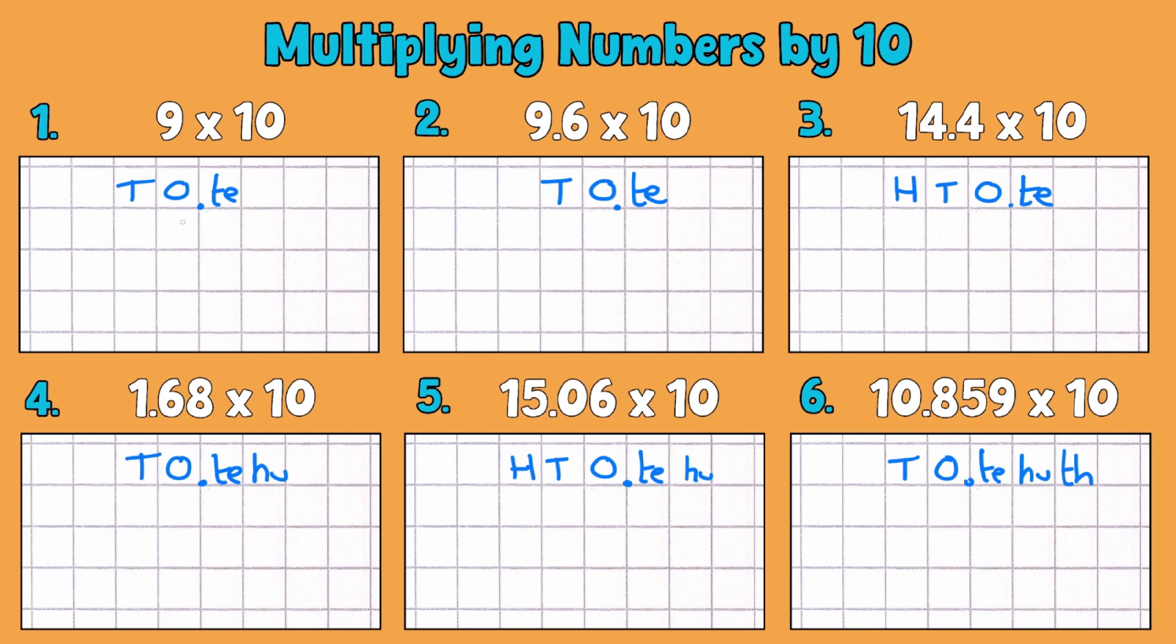So 9 multiplied by 10. We'll put in our 9 in the ones column and then our decimal place. Now 9 is the same as 9 whole ones and no tenths because I've just got 9. Now we know that using our multiplication tables, 9 times 10 is 90. So what's actually happened when we make 9 ten times bigger? Well our 9 has moved one place over to the left and our 0 from tenths has followed it one place over to the left as well.